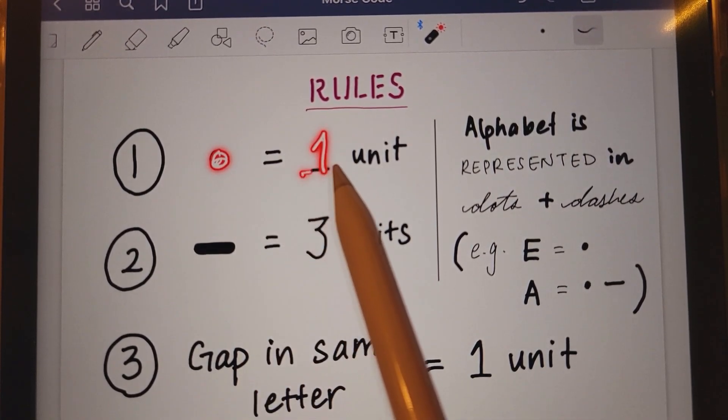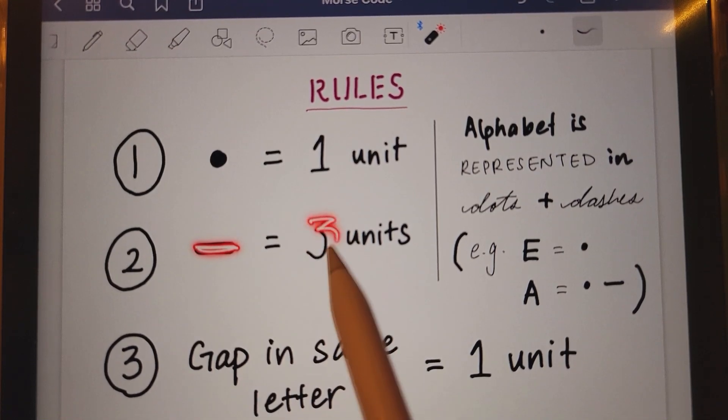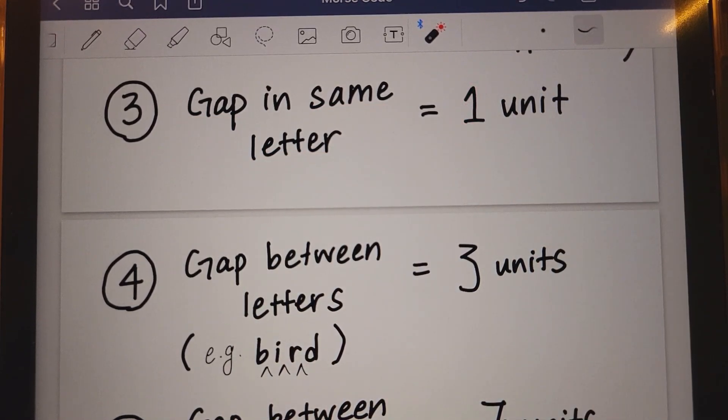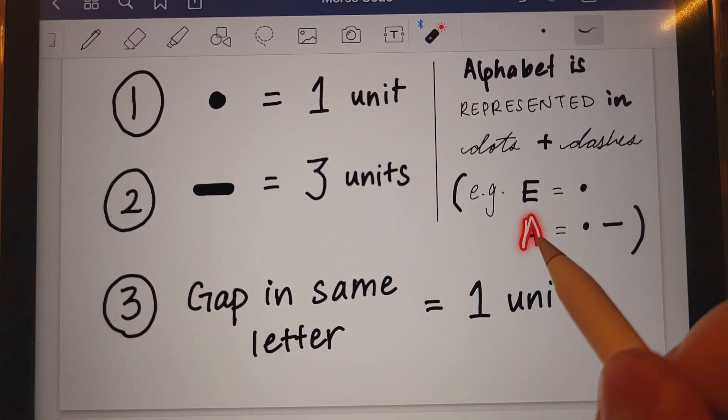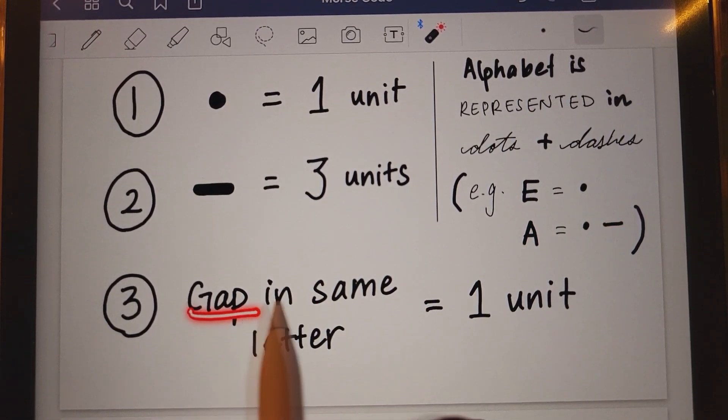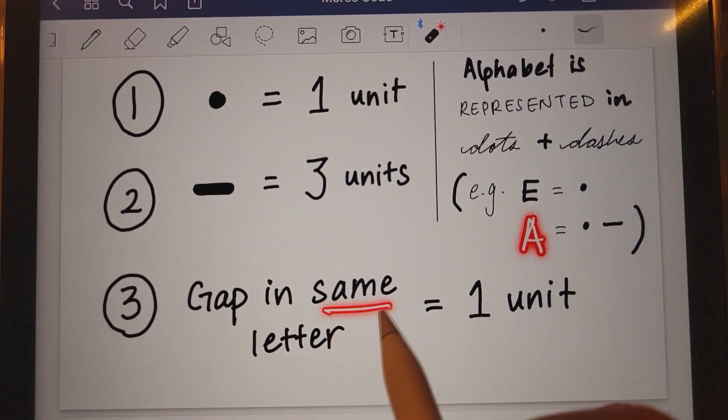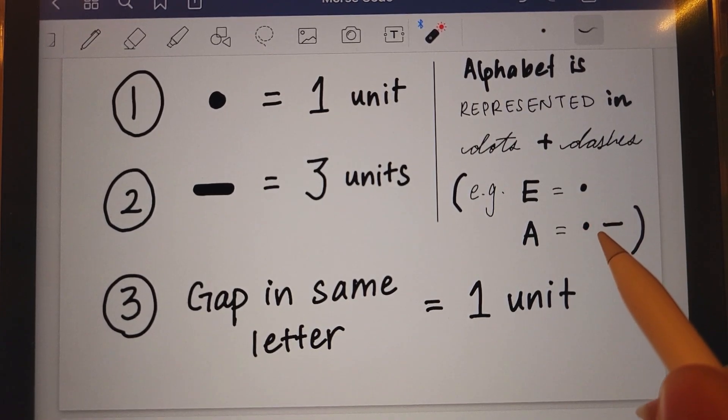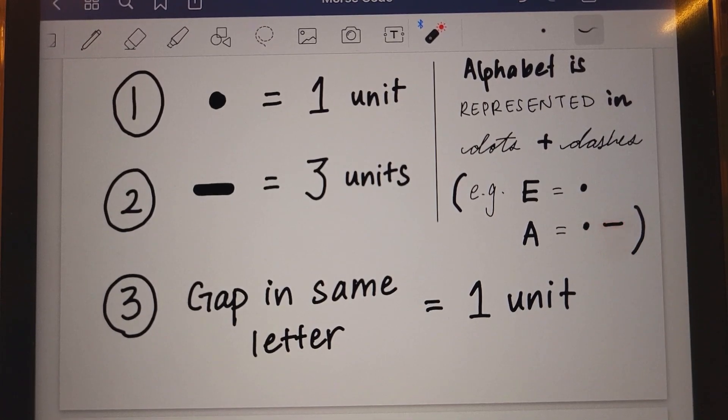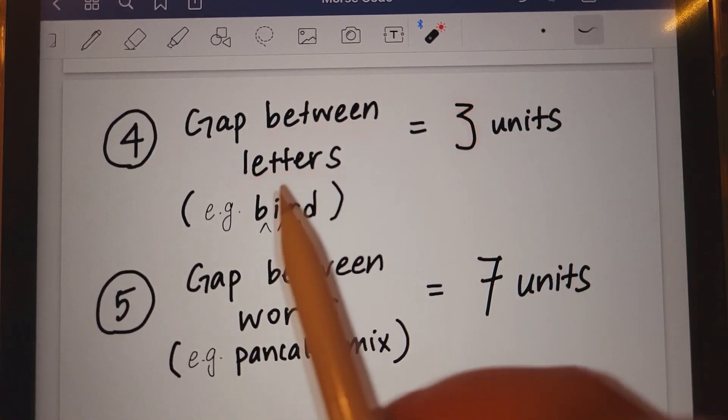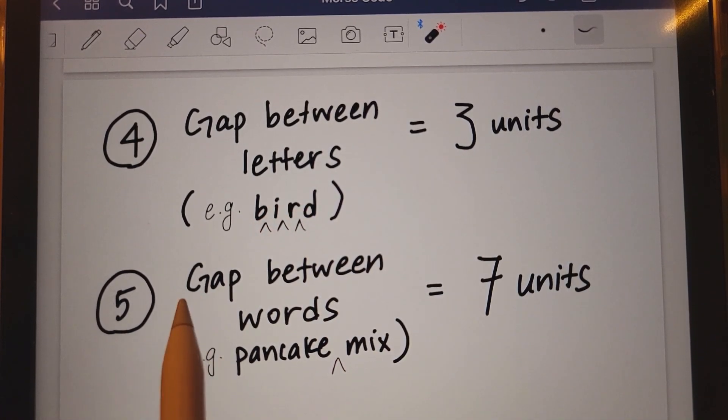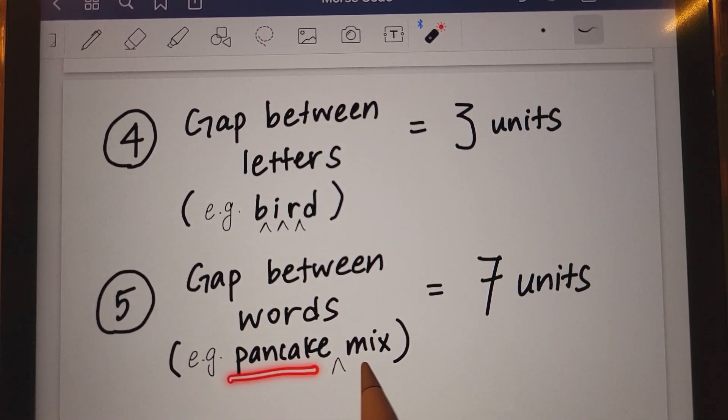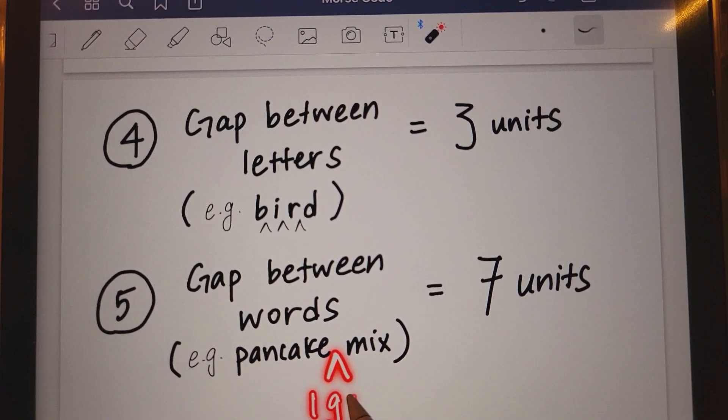Okay. So, review. One dot is one unit. One dash, three units. One unit. Meaning, if A is equal to a dot and a dash, the gap that is between the dot and a dash in the same letter of A, that gap is equivalent to one unit. So, dot, gap, one unit, dash, three unit. Now, the gap between letters is three units. So, between B and I, I and R and R and D. Gap between words is seven units. So, the gap between pancake and mix, that's seven units in between that because that is one gap.